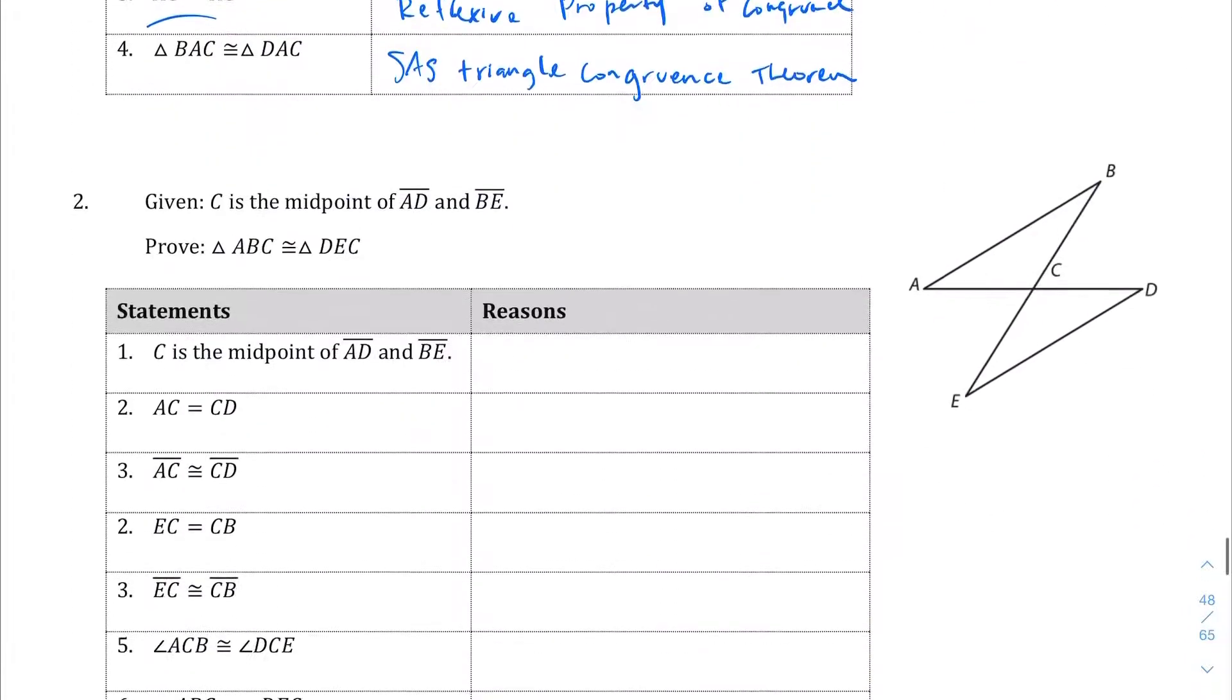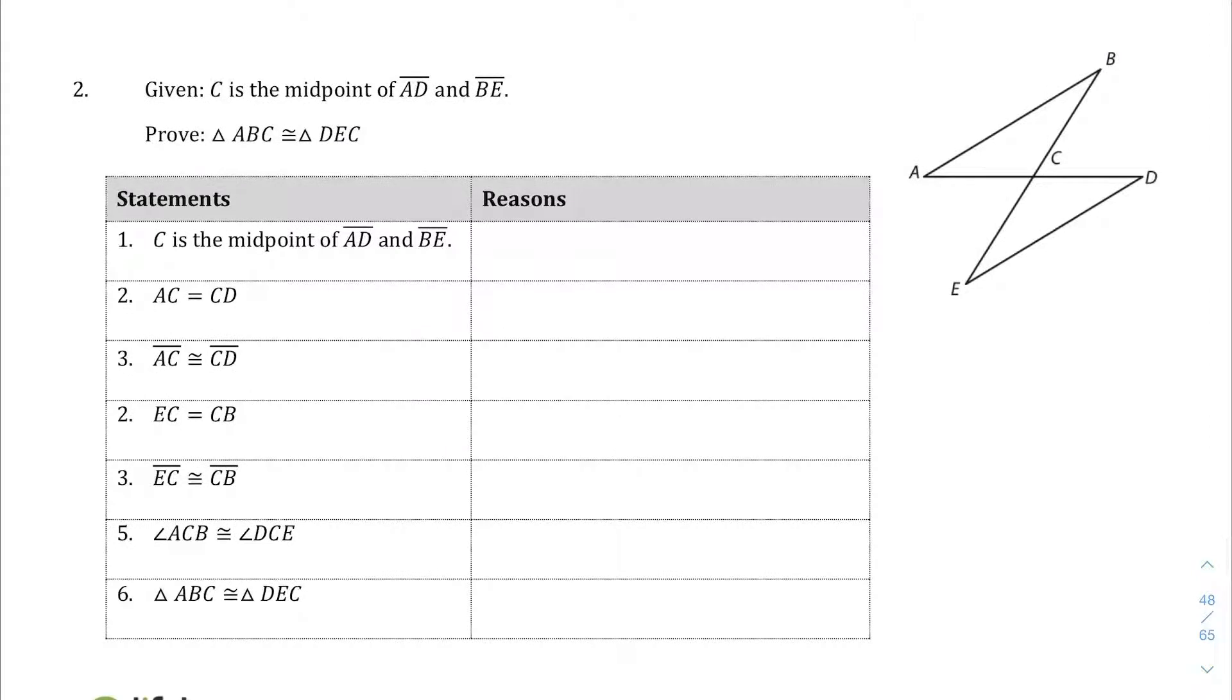Okay. Cool. Okay. Question number two. We are given that C is a midpoint of AD and BE. And we need to prove triangle ABC is congruent to triangle DEC. So this first statement is our given statement here.